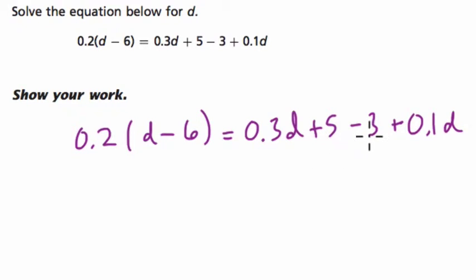So for example, I've got plus 5 minus 3. That's just 2, right? 5 minus 3 is 2. I've got 0.3d and 0.1d. If I add those two up, 0.3 plus 0.1, that's just 0.4d plus 2. And look at how much simpler that looks.